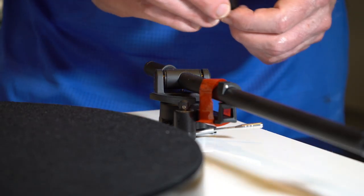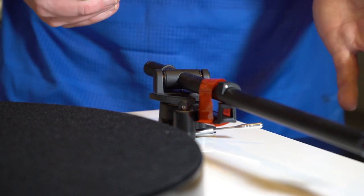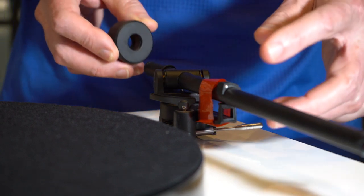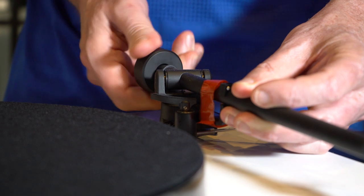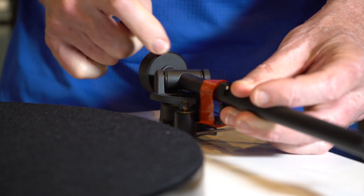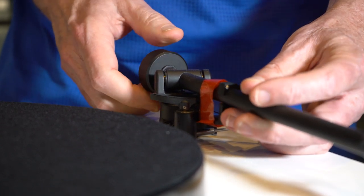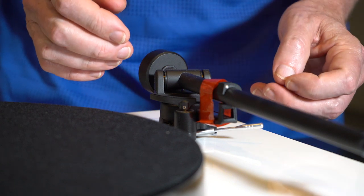The next step is to put on the counterweight. On the Planar 1, it is really simple. All you do is take the counterweight and just twist it on the back of the tonearm until it stops. There's a little break there. It will stop and it won't go any further. It's in the right spot when you've got it there.